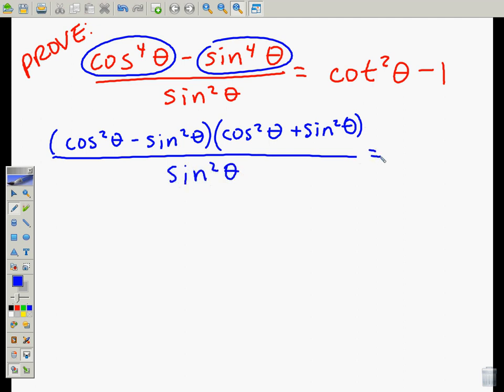And so we want to prove that this is equal to cotangent squared theta. What this conveniently shows us is that our cosine squared plus sine squared is actually equal to one.